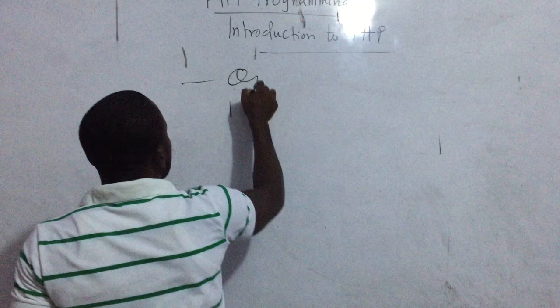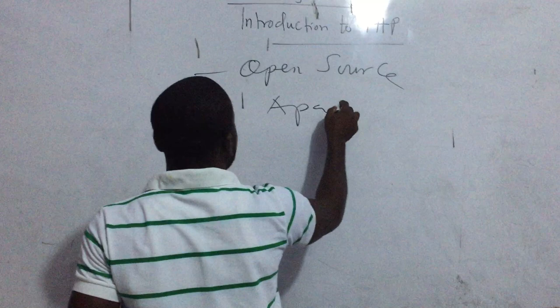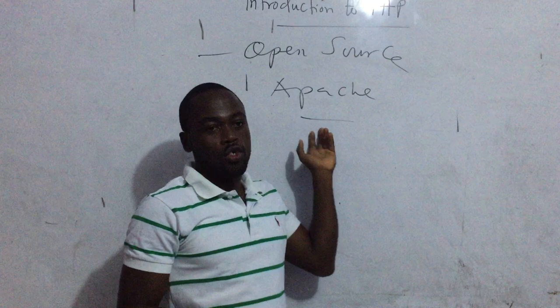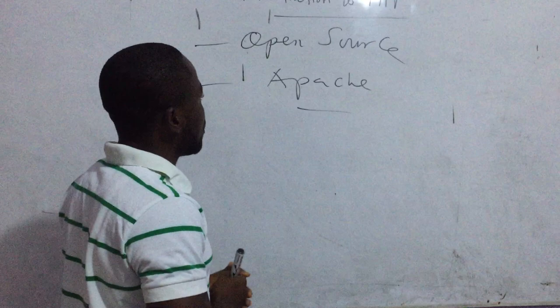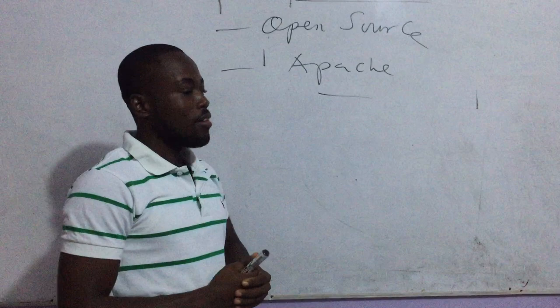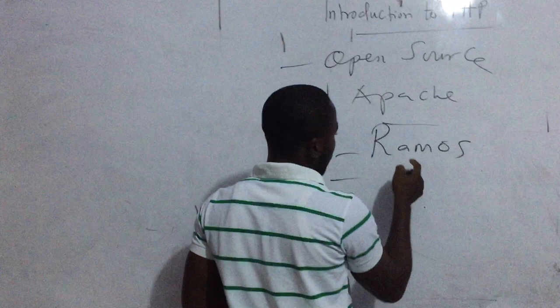PHP is licensed under the Apache Foundation. When we say a language is open source, we mean there is no proprietary ownership to it — it is a community-driven language. The original developer of PHP is Rasmus, and there is a community supporting him to come up with the PHP specification requirement, or PSR.